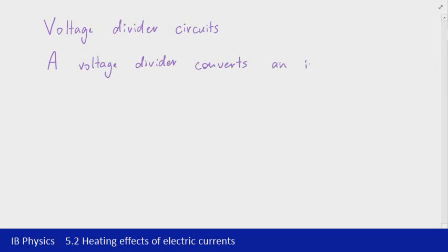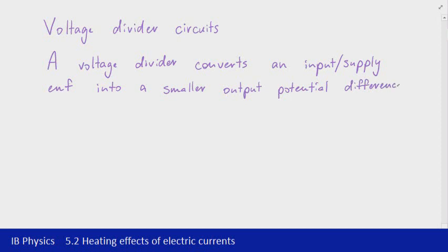Simply put, a voltage divider converts an input or supply voltage. So if we take a battery or a power pack, and if it has an EMF that's too big, we can use a voltage divider circuit to produce smaller output voltages. It's not always going to be the case that the voltage you need is going to be the voltage you're able to supply, and so we can use a voltage divider circuit to produce the appropriate potential difference that we need as an output.